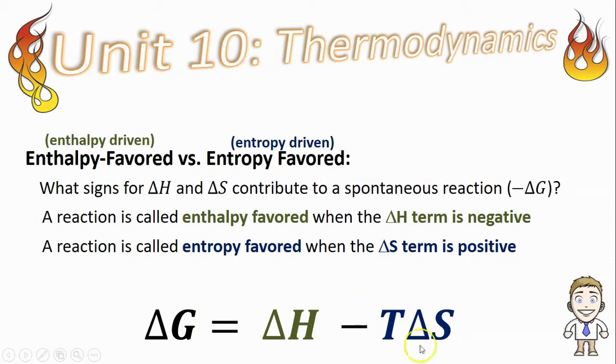Or think about it the opposite way, what if delta S was negative? In that case you'd be subtracting a negative or adding a number which would be doing the opposite. That would be helping delta G to be positive which we don't want.